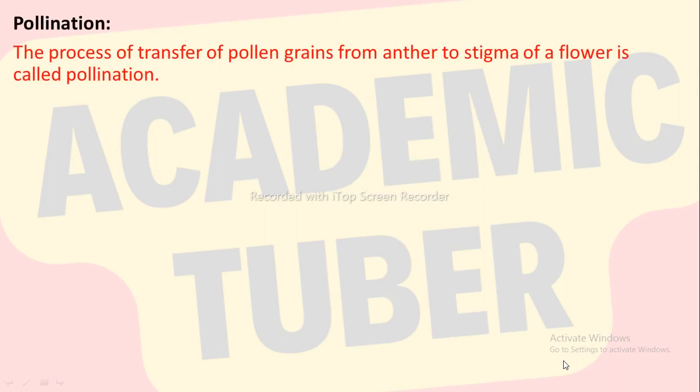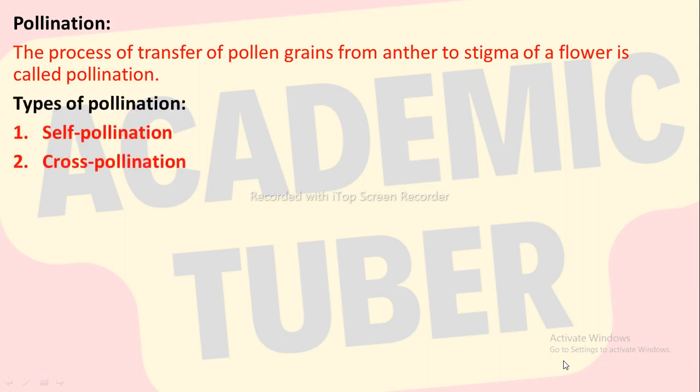Pollination. The process of transfer of pollen grains from anther to stigma of a flower is called pollination. There are two types of pollination: self-pollination and cross-pollination.